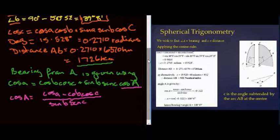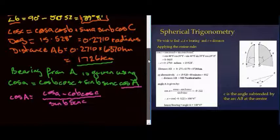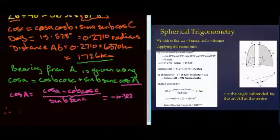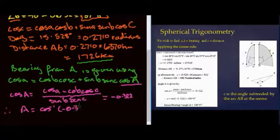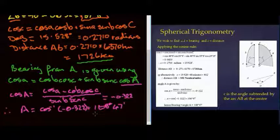And when you plug those figures in, and exactly the same figures as we had before, so let's just have a look at those. There's my a, b and I now have what my c is. So when we plug those in, we get a figure that is minus 0.322. Therefore, A is going to be cos inverse of that. So A equals cos inverse of minus 0.322 and that equals 108 degrees 47 minutes. And there is my bearing.